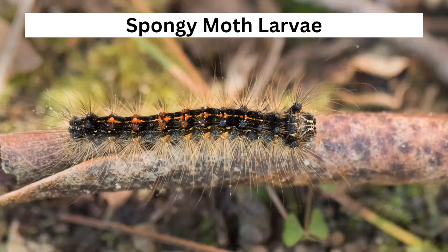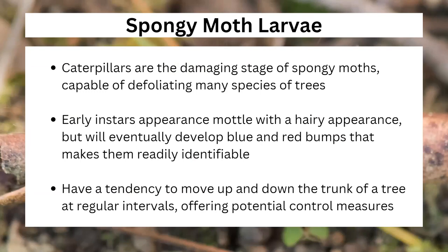Spongy Moth larvae are the easier part to identify — these can be readily identified, at least in the later larval stages. These are the damaging portions of this insect's life cycle. They have chewing mouth parts that they can use to completely defoliate trees. The early instars, meaning the early growth stages of this caterpillar, are going to be mottled and won't stand out very much, though they will have that same fringe of hair. Eventually, they're going to develop these red and blue bumps that make them very, very easily identifiable. They'll also have a tendency to move up and down the trunk of a tree at regular intervals to avoid predators and to manage the heat of the day, and that's actually going to offer us some control measures.